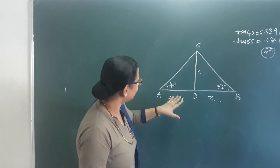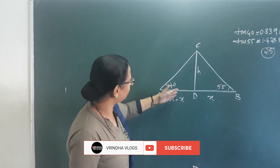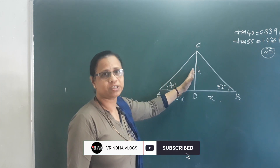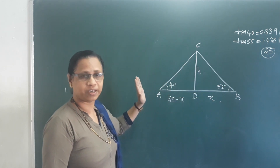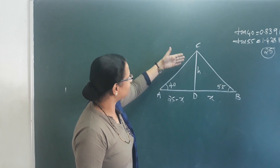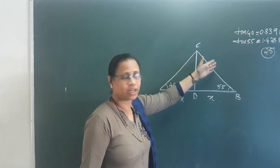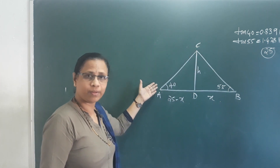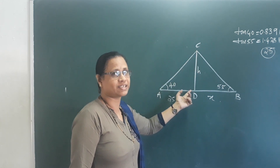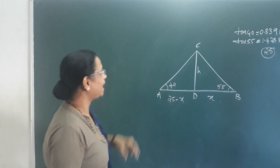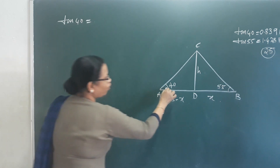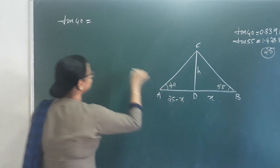We don't need the hypotenuse — this is the opposite side and the adjacent side. We don't need the sine because we are not talking about the length of the wire. We are talking about the electric post height. Let's take tan 40. Tan 40 is equal to opposite side by adjacent side.